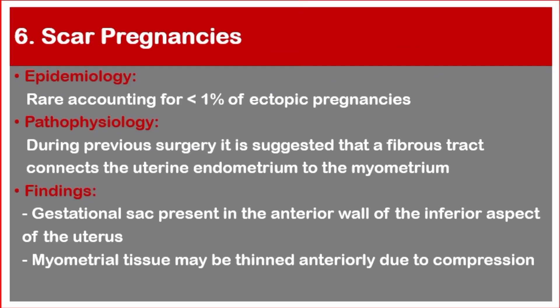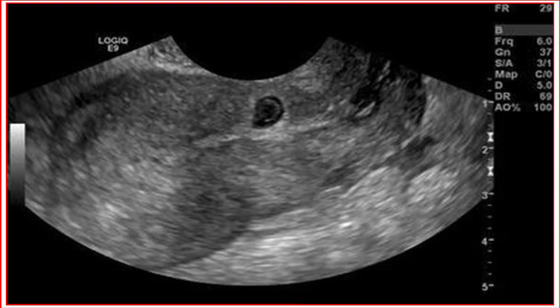Number six: scar pregnancy. Epidemiology — rare, accounting for less than one percent of ectopic pregnancies. Pathophysiology: during previous surgery, a fibrous tract connects the uterine endometrium to the myometrium. Ultrasound findings: gestational sac present in the anterior wall at the inferior aspect of the uterus; myometrial tissue may be thinned anteriorly due to compression.